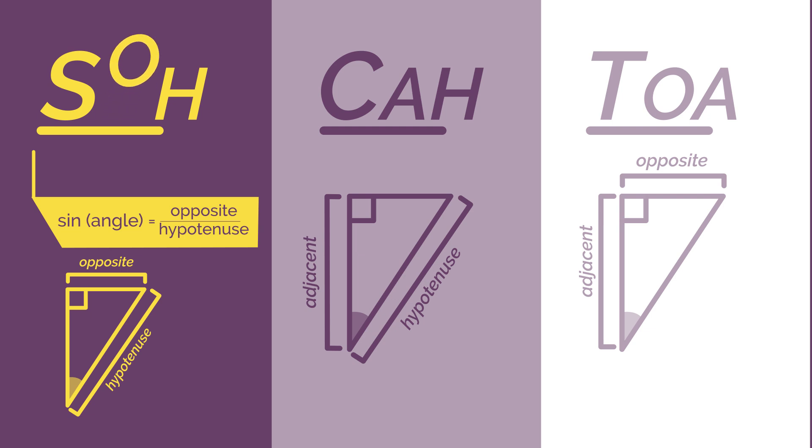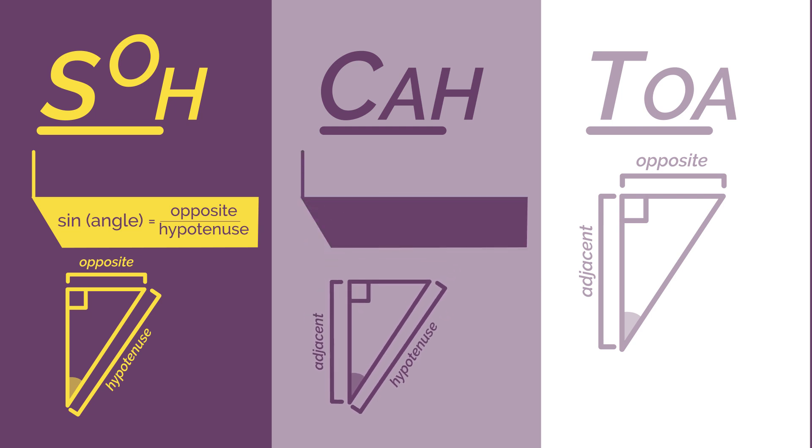You may want to write it like this to remember it is opposite divided by hypotenuse. And cos of the angle is adjacent divided by hypotenuse, hence CAH.